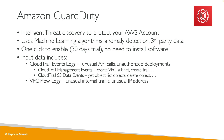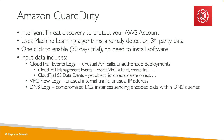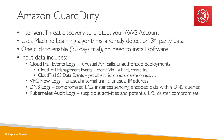And then for VPC flow logs, it's going to look at unusual internet traffic and unusual IP addresses. For DNS logs, it looks at EC2 instances sending encoded data within DNS queries, which would mean they're compromised. And Kubernetes audit logs to find suspicious activities on your EKS, your Kubernetes cluster compromises.